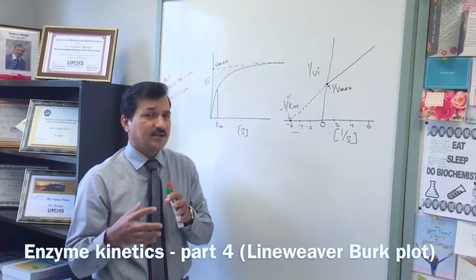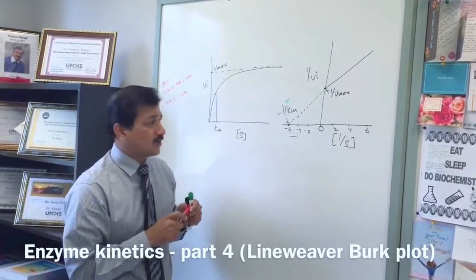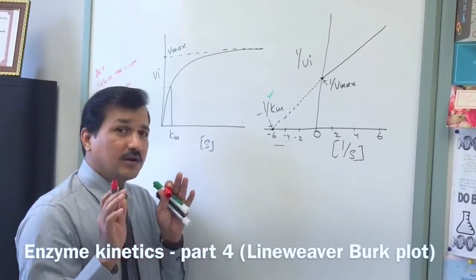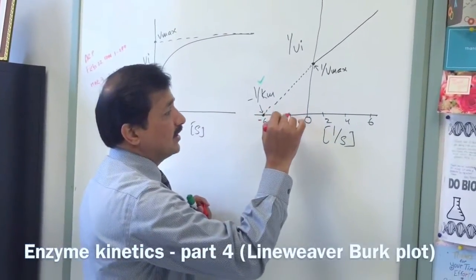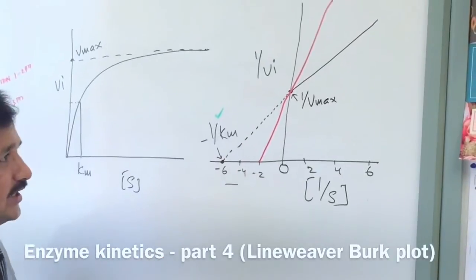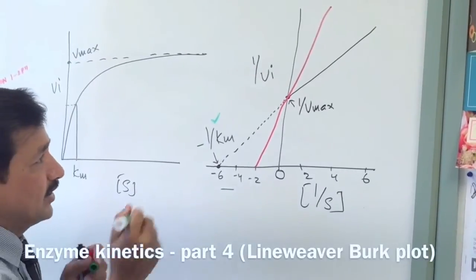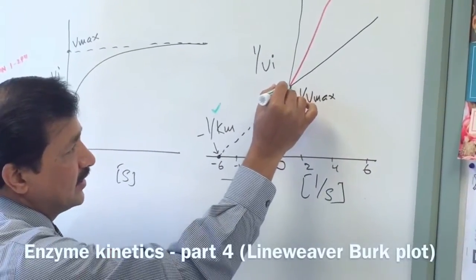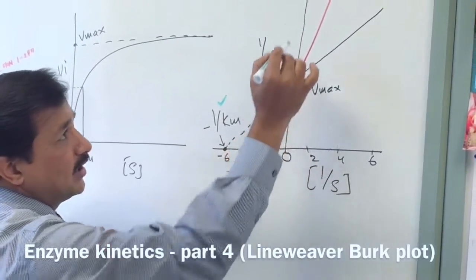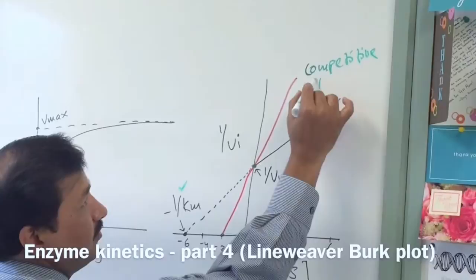If we want to depict this in terms of the Lineweaver-Burk plot, the reaction velocity curve in the presence of competitive inhibitor will be a straight line meeting on the same Vmax point on the y-axis, whereas the Km is going towards 0. So the new Km in the presence of competitive inhibitor changes.